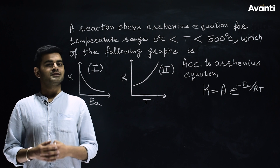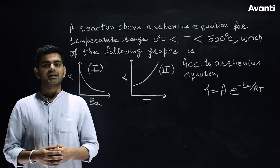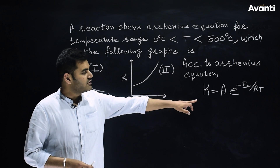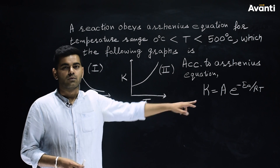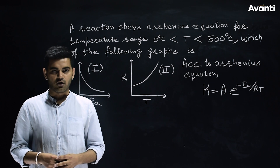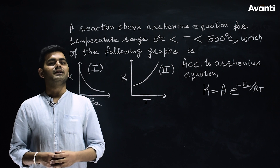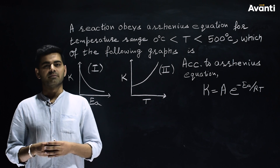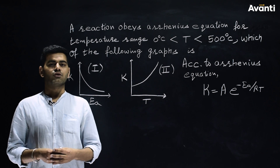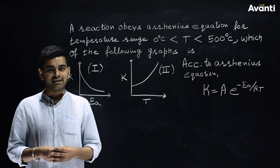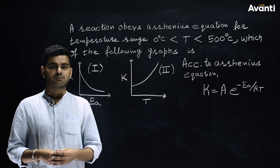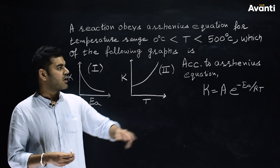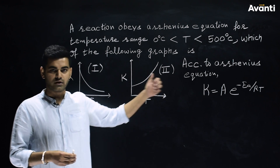According to the Arrhenius equation, K = A·e^(-Ea/RT), where K is the rate constant, Ea is the activation energy, and T is the temperature.